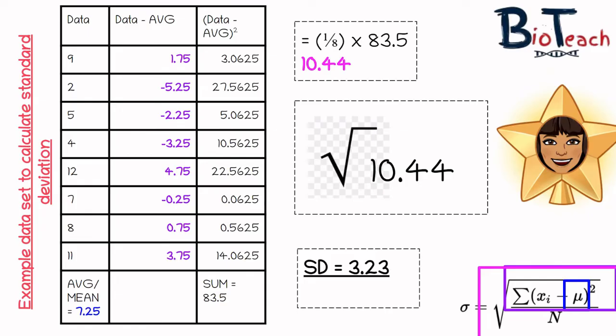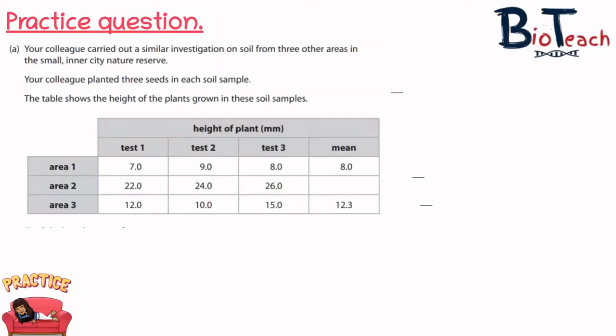In the exam you will have to know which numbers to plug in where. This practice question is taken directly from the exam and it shows an experiment looking at soil from three different areas. The colleague has planted three seeds in each of the soil samples and taken three tests of three areas — so you can see test one, test two, test three and then the mean.